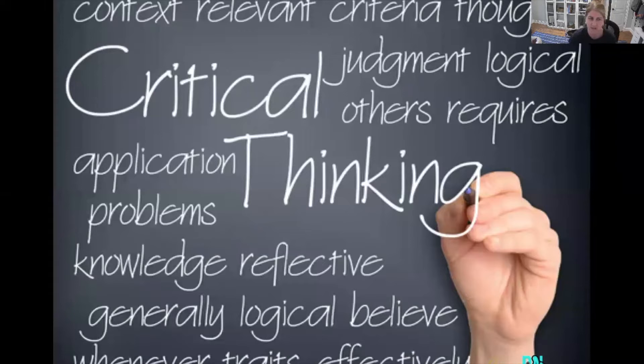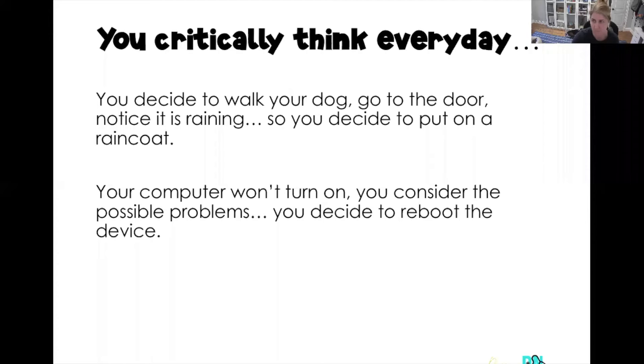Critical thinking is context, it's relevant, it's criteria, it's thinking, it's judgment, knowledge, reflection, logical, your belief, your traits, problems, application. All of these are great words to describe critical thinking. But let's make it even simpler.